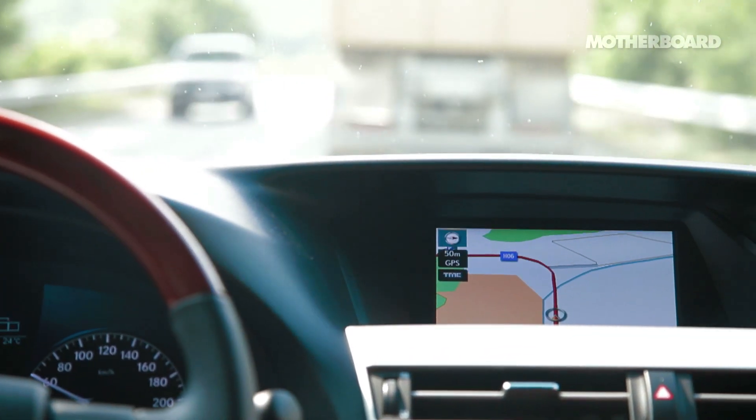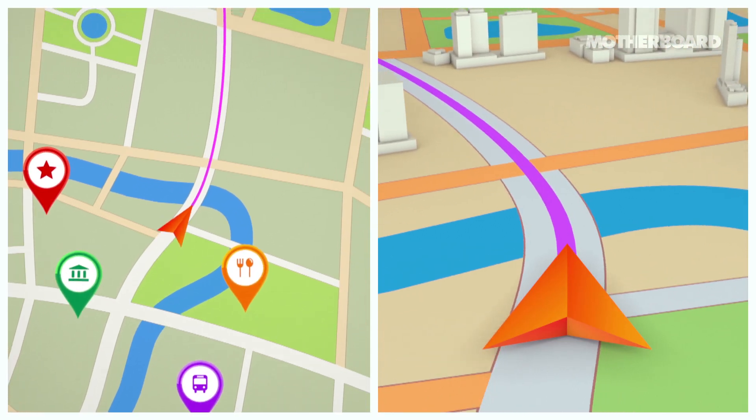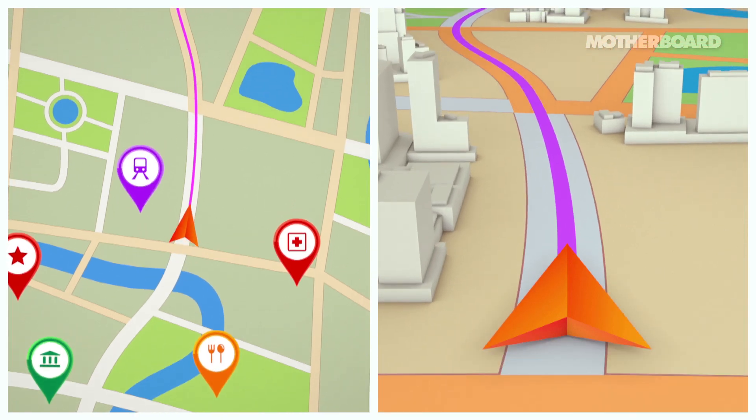When you drive an automobile today, you are driving a big computer system that happens to have wheels and a motor. There's almost nothing in your car that is not mediated by a computer. When you step on the gas pedal, it is not directly controlling the fuel-oxygen mixture. Rather, it is telling a computer that you, the driver, wish to go faster, and then it decides the right way to do that. Not only are they networked to each other so that the brakes can talk to the engine for stability control and so forth, but they're also networked to the outside world. Effectively, your car is on the internet.